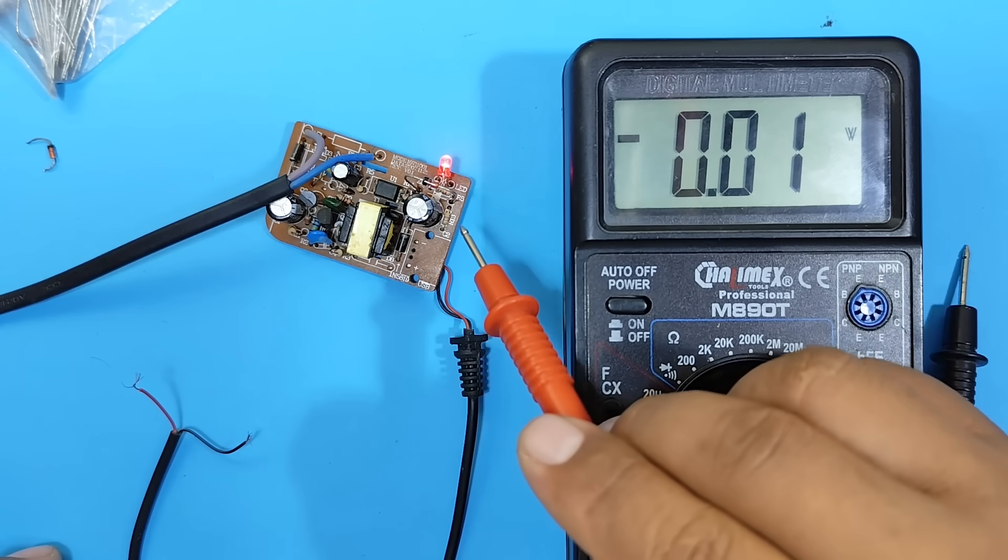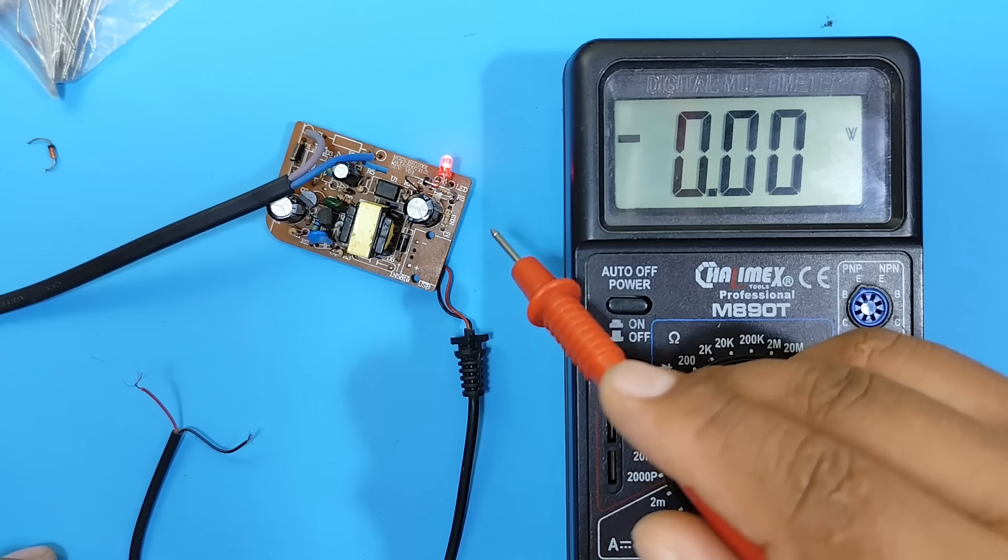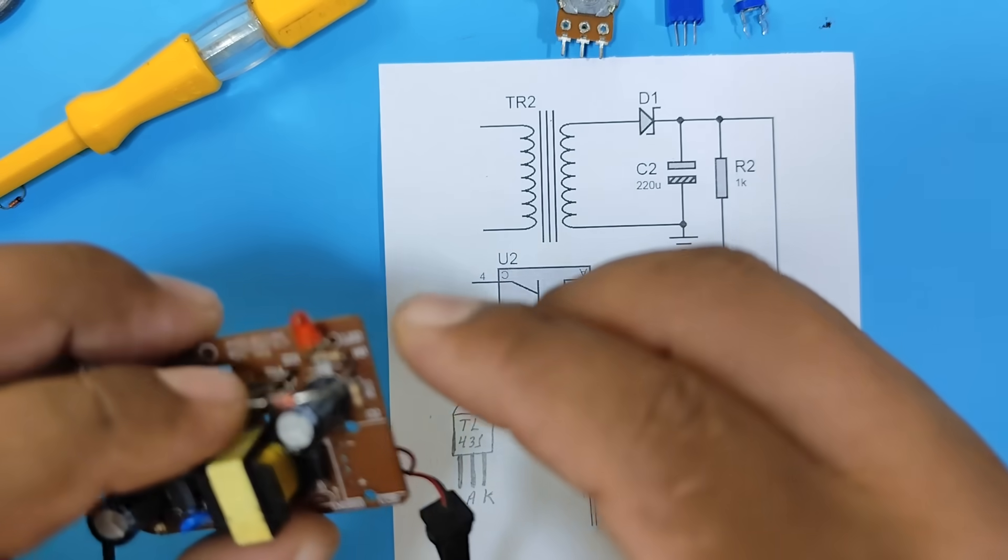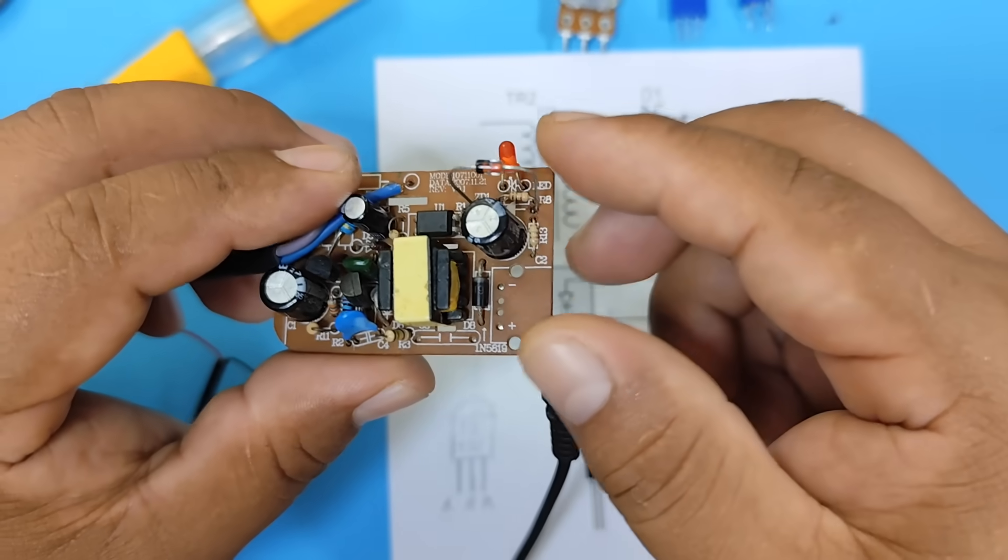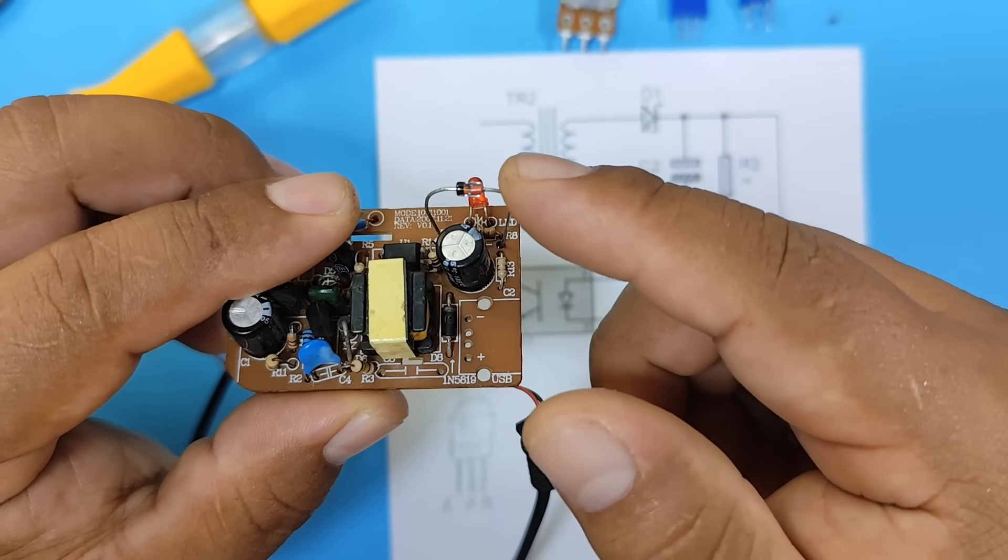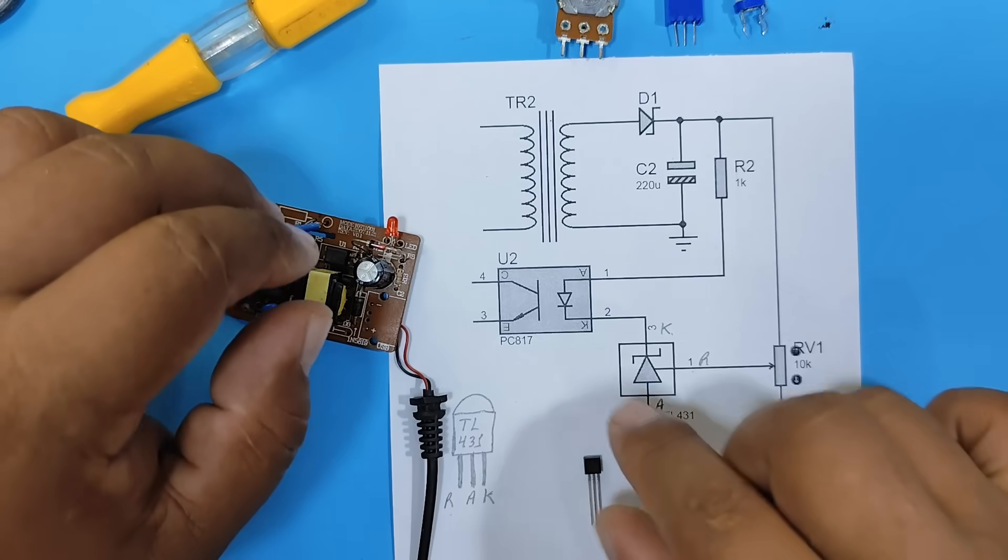Now, to have a variable or adjustable output, let's look at another method. Ok, to get a variable output on our cell phone charger, we need to replace this Zener diode with a TL431, which is a programmable Zener diode.